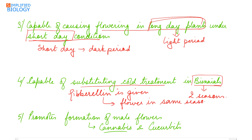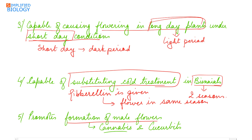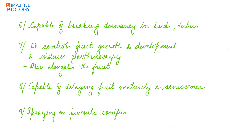Gibberellin promotes the formation of male flowers, especially in cannabis and cucurbits. It also has the capability of breaking dormancy in buds and tubers.